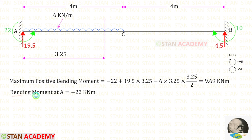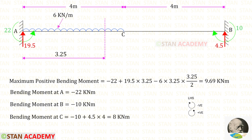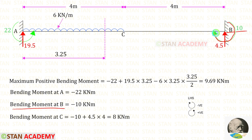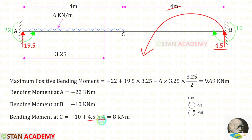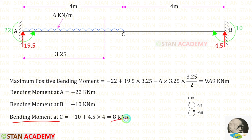Now let us find the bending moments at key points. At point A, we have MA acting anti-clockwise so it is negative. To find the bending moments at points C and B, we use the left-hand side rule: clockwise is negative and anti-clockwise is positive. At point B, MB is acting clockwise so it is negative. At point C, MB is negative and RB acting anti-clockwise is positive with distance 4, giving 4.5 × 4 = 8 kNm.